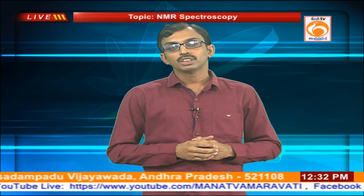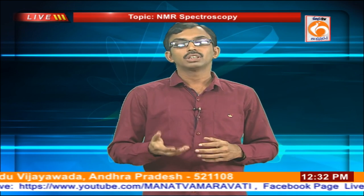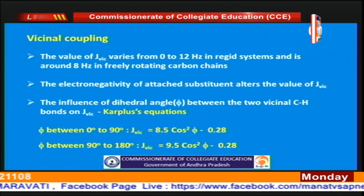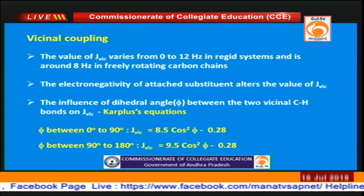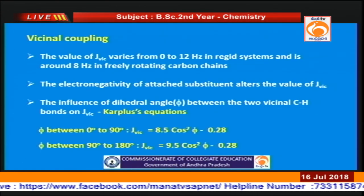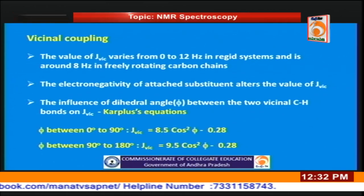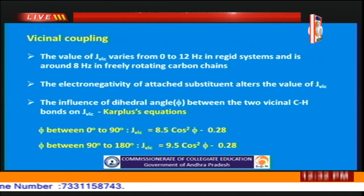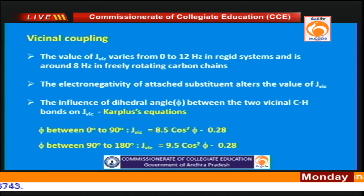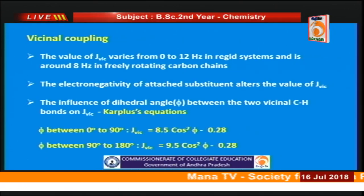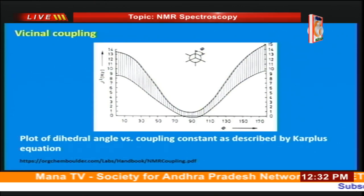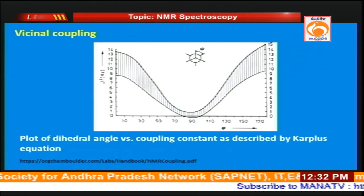Vicinal coupling occurs whenever the two coupled protons are separated by three bonds; J_vic values are in the range of 0 to 12 Hz. The influence of the dihedral angle on J values can be better explained using the Karplus equation. This diagram represents the effect of the dihedral angle on the coupling constant.